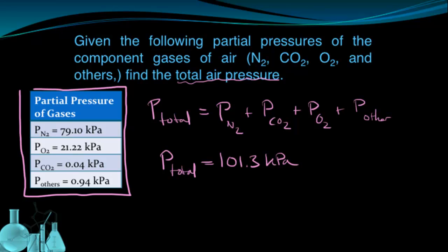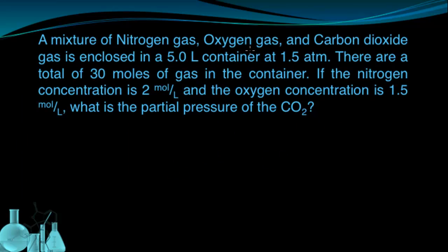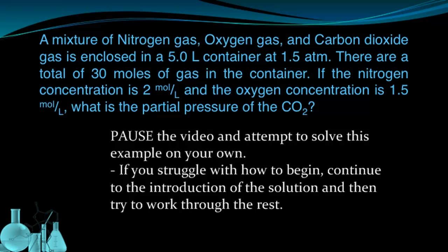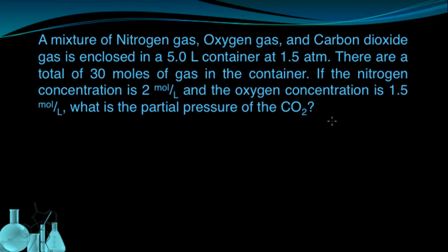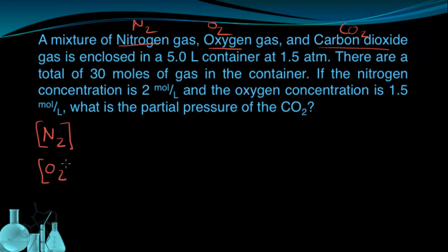Let's take a look at an example that's a little more rigorous. A mixture of nitrogen gas, oxygen gas, and carbon dioxide gas is enclosed in a 5-liter container at 1.5 atmospheres. There are 30 moles of gas total in the container. The nitrogen concentration is 2 moles per liter and the oxygen concentration is 1.5 moles per liter. We want to find the partial pressure of the carbon dioxide. My three gases are N₂, O₂, and CO₂.